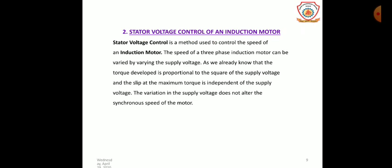The stator voltage control method is used to control the speed of an induction motor. The speed of a three-phase induction motor can be controlled by varying the stator voltage, which is varied until the torque required by the load is developed at the desired speed. The torque developed is proportional to the square of the supply voltage, and the current is proportional to the voltage. To reduce speed, the voltage is reduced, which reduces the torque. An example of this method is fan load.